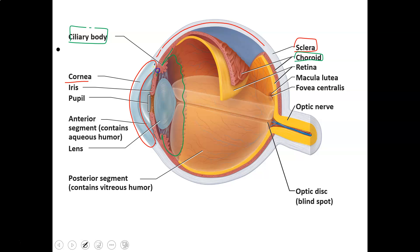Also part of the vascular layer is the iris, which is the colored part of your eye. For example, blue eyes mean the iris is blue. The iris, ciliary body, and choroid all make up the vascular layer.